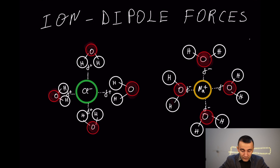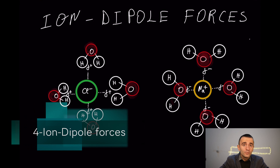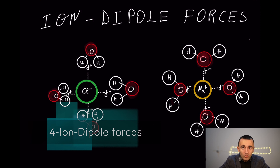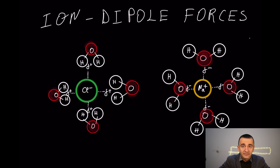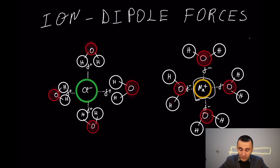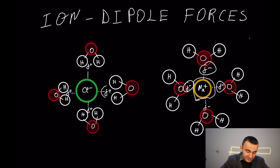The last intermolecular force is ion-dipole forces, which occur when an ionic compound is mixed with a polar compound. This is especially important in aqueous solution. For example, when sodium chloride is mixed with water, sodium and chloride ions interact with water via ion-dipole forces. The positive sodium cation interacts with the delta negative oxygen side of water, while the chloride ion interacts with the delta positive side of water. This force is even more powerful than the hydrogen bond.